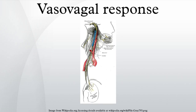When sufferers pass out, they fall down, and when in this position, effective blood flow to the brain is immediately restored, allowing the person to regain consciousness. If the person does not fall into a fully flat supine position and the head remains elevated above the trunk, a seizure may result from the blood's inability to return quickly to the brain.